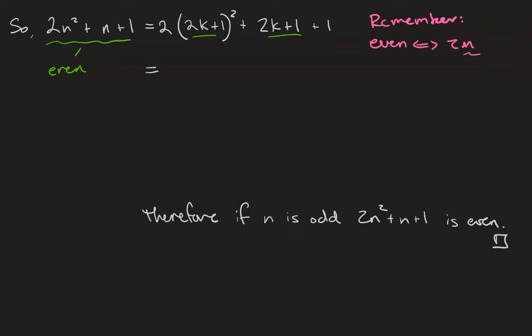Remember that when we expand 2k plus 1 squared, it's got a middle term. So this is going to be 4k squared plus 2 times 2k times 1, which is 4k, plus 1 squared, which is just 1, plus 2k plus 1, plus 1.